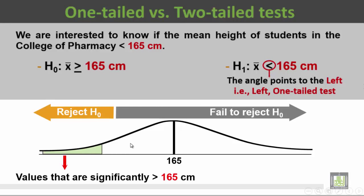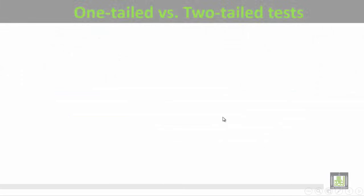If the mean value of heights of students in the College of Pharmacy is much less than 165, we will be able to reject the null hypothesis. The shaded area concerns values that are significantly less than 165 centimeters. For all other values outside the shaded area, we will not be able to reject H0 — this condition is called failure to reject H0.